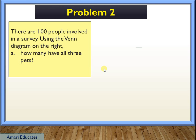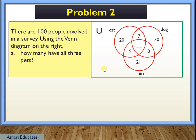There are 100 people involved in a survey. Using the Venn Diagram on the right, how many have all the 3 pets? You can pause the video and the time is up. The answer is 5.